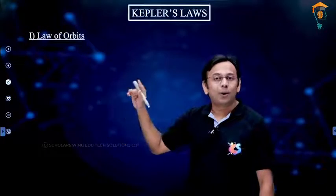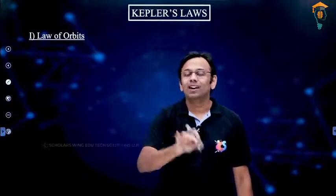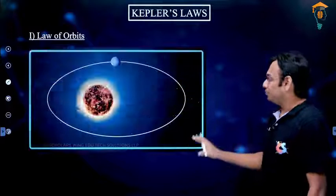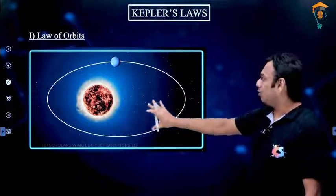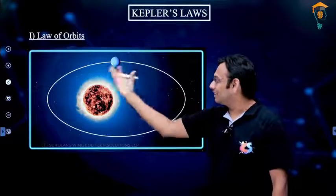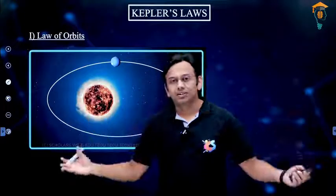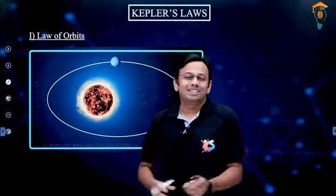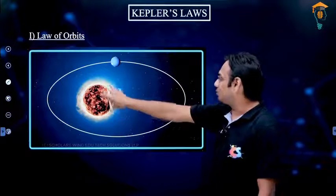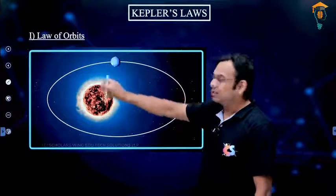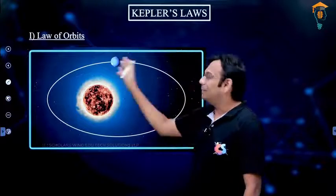Let's look at the first law of Kepler, which is known as the law of orbits. It says that planets revolve around the sun in elliptical orbits, and the sun lies at one of the foci of the ellipse. Let me show you what I mean. This is the representation of the sun and a planet — our own Earth — revolving around the sun. In reality, the size of the orbit is much larger than the size of the sun or Earth.